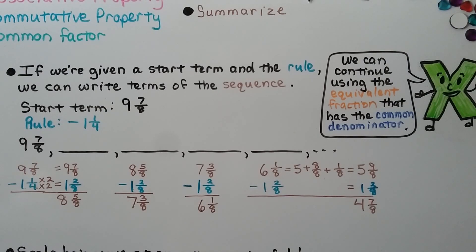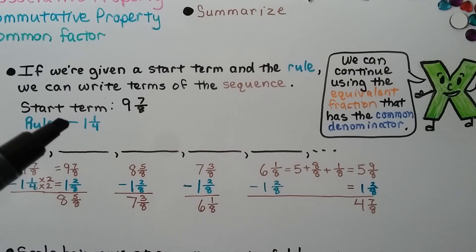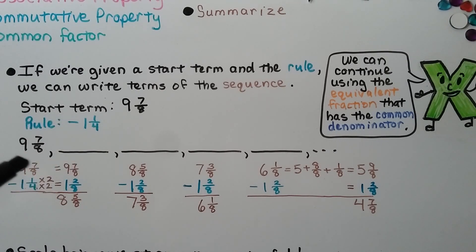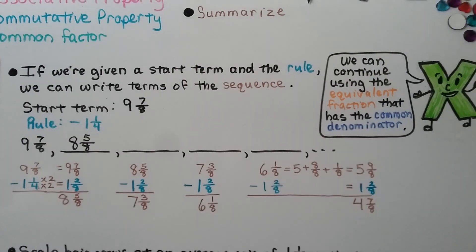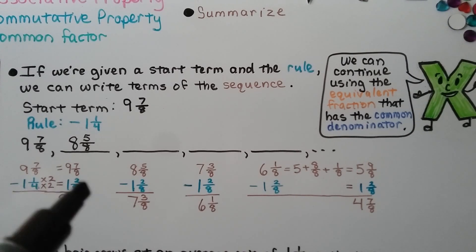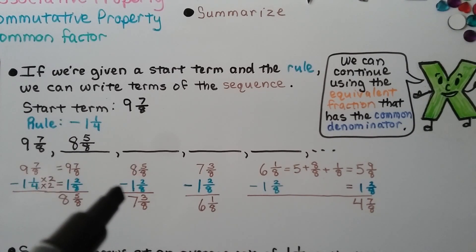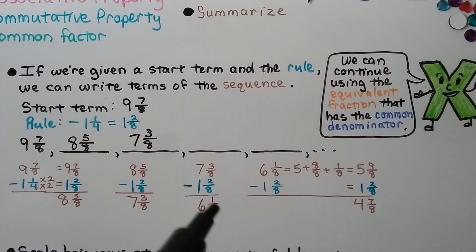If we're given a start term and the rule, we can write terms of the sequence. Our start term is nine and seven eighths and the rule is subtract one and one fourth. They have different denominators, so we use a common denominator of eight: one and one fourth becomes one and two eighths. Nine and seven eighths minus one and two eighths is eight and five eighths. Subtracting one and two eighths again gives seven and three eighths. Subtracting one and two eighths again: three minus two is one eighth, seven minus one is six — giving six and one eighth.